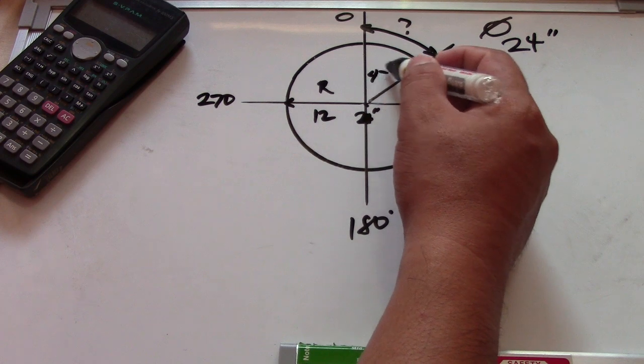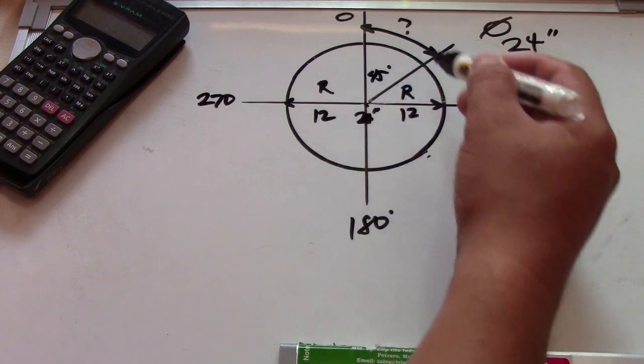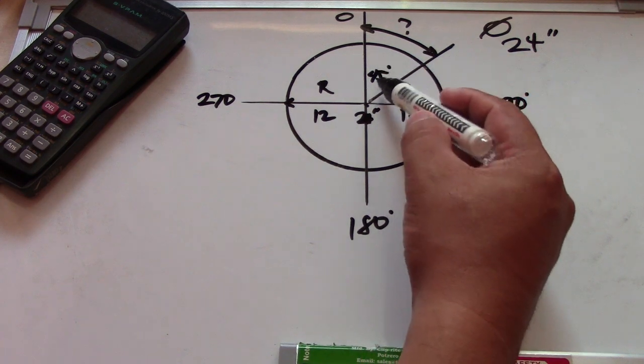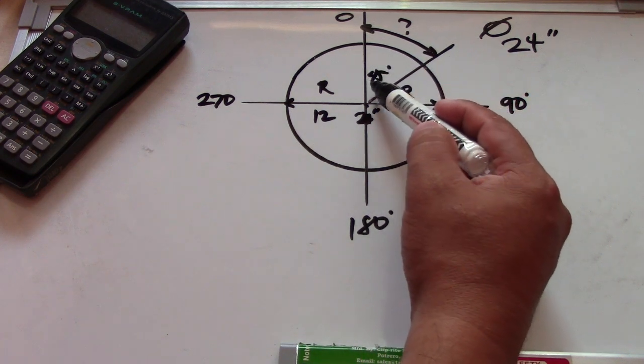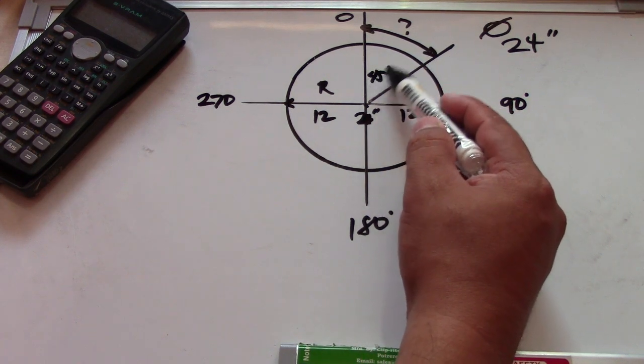We also have a given angle of 45 degrees to find the arc length. So this is the 45-degree angle, and this is our radius.